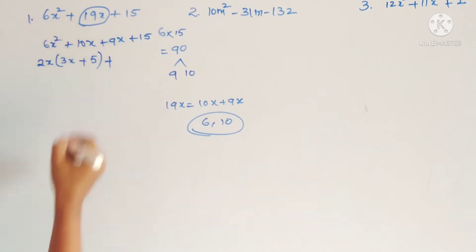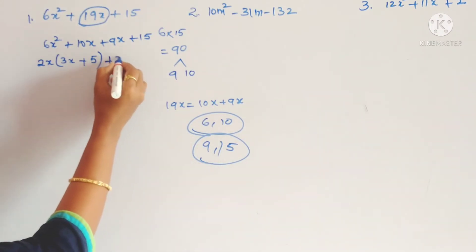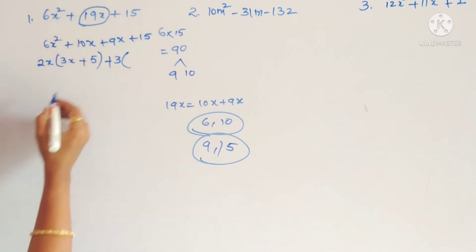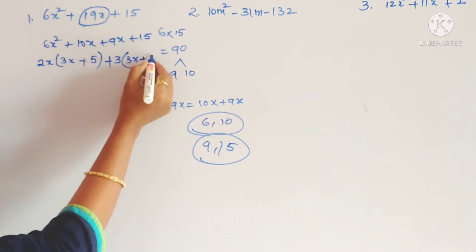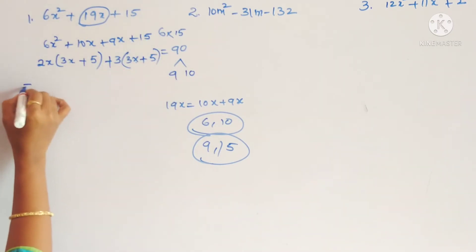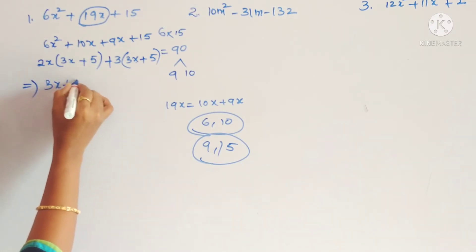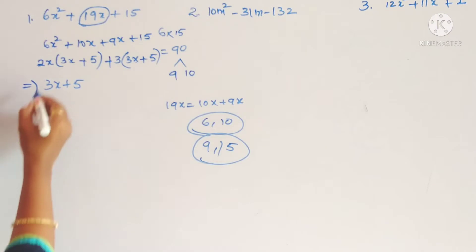Now see here, 9 and 15. So what is the common factor for 9 and 15? 3 only. 3 threes and 3 fives. And one more important thing you have to keep in your mind is the first bracket. In the first bracket and in the second bracket, they should be the same.